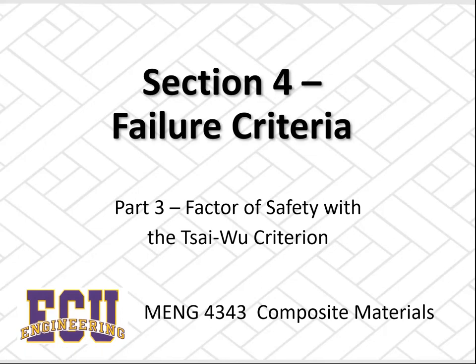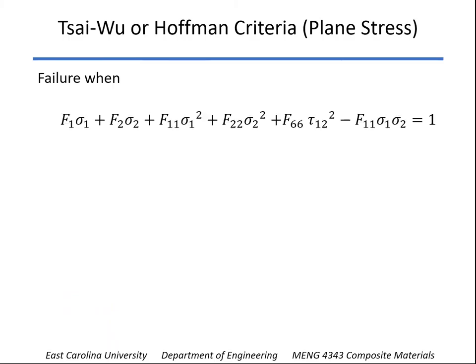Last time we showed how the Tsai-Wu criterion works and showed the final equation that demonstrates failure occurs when this polynomial is equal to 1. We also noted that the Hoffman criterion, when used in the form shown, is the same as the Tsai-Wu criterion, and that if we use this with a ductile material it can reduce to the von Mises yield criterion.